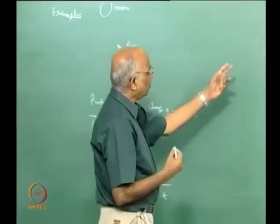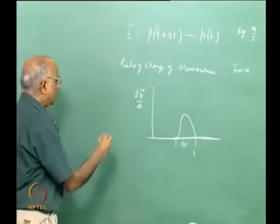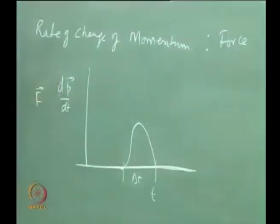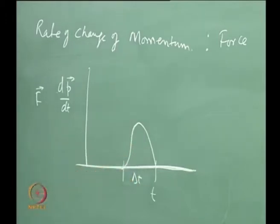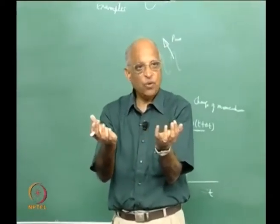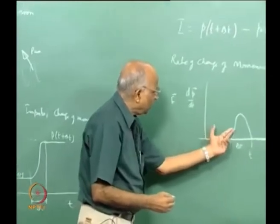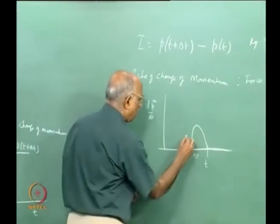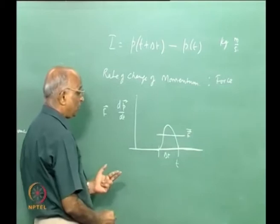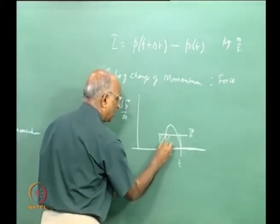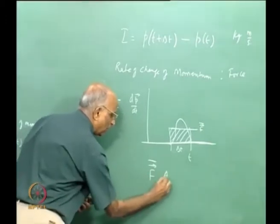I call the rate of change of momentum as force. The force due to change of momentum is not constant — it keeps varying. Therefore whenever I change momentum and ask what is the force, it is difficult to say how this force varies with time. So what we say is that force continually varies during the change of momentum, and the best we can do is take an average value. Whenever we talk of force, we mean something like an average value.